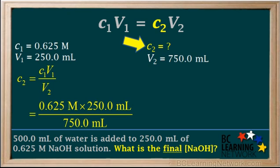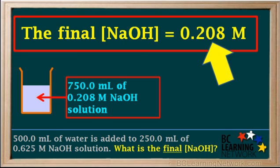Now we can proceed to calculate the value of the final concentration, C2. We can cancel mL from the top and the bottom, and we're left with the unit molar. We calculate our final answer by taking 0.625 times 250 divided by 750, which gives us a final answer of 0.208 molar. The final concentration of NaOH in our solution is 0.208 molar.